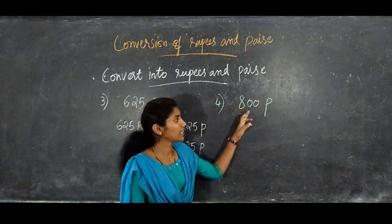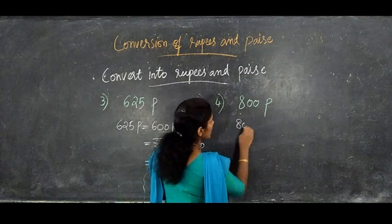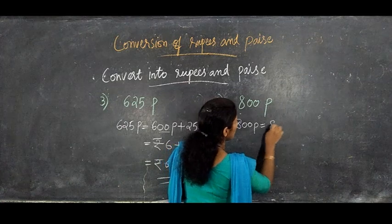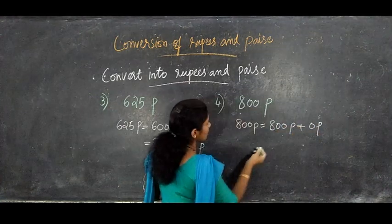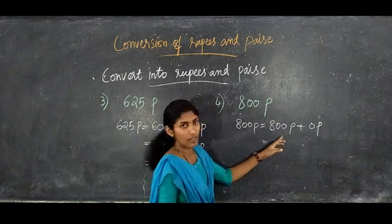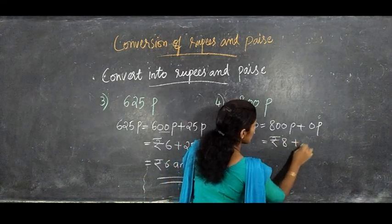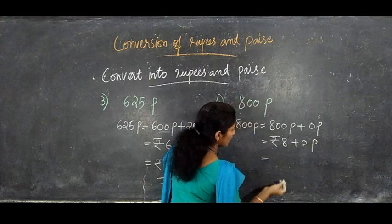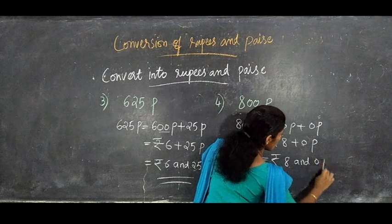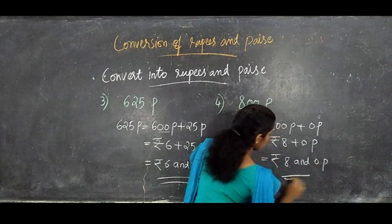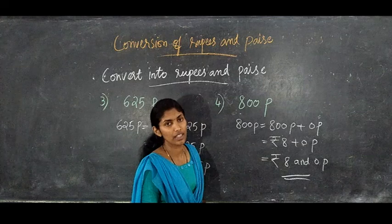Next, convert 800 paisa to rupees and paisa. We write 800 paisa as 800 paisa plus 0 paisa. Converting 800 paisa to rupees by removing 2 zeros gives rupees 8. So 800 paisa equals 8 rupees and 0 paisa.